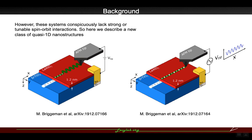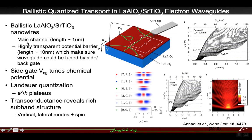We use atomic force microscopy to write main channels and also barriers by applying positive or negative voltage. The device can also be tuned by a side gate. When cooled down to low temperatures such as 20 or 50 millikelvin, it exhibits interesting phenomena such as quantized conductance.